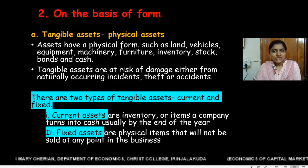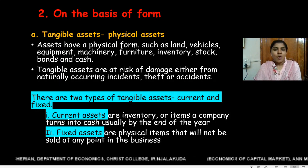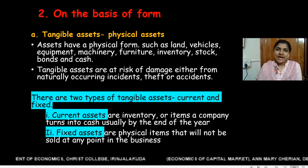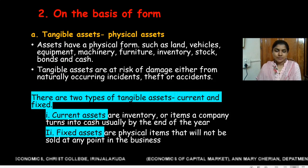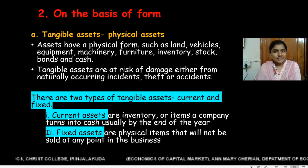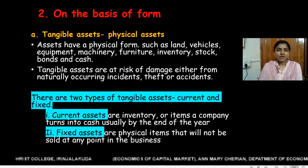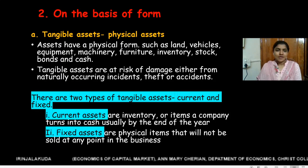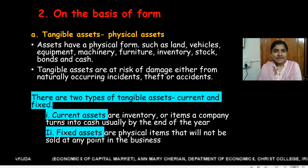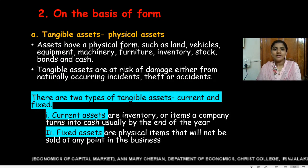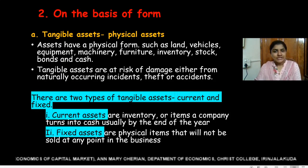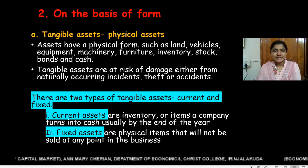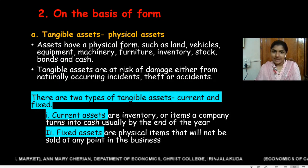Now let us move on to the next classification. On the basis of form, we can classify financial assets into two: tangible assets and intangible assets. Tangible assets are also known as physical assets because they have a physical form. Examples of tangible assets are land, vehicles, equipment, machineries, furnitures, inventories, stocks, bonds, and cash.